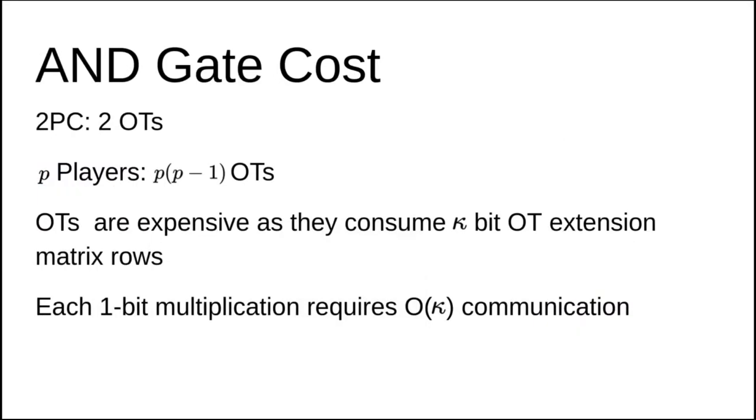Alice and Bob then output their respective shares. We showed that in order to evaluate an AND gate by two parties, we need to evaluate two terms interactively. Each of these interactive terms is evaluated via OT. As OTs are very expensive, the cost of an AND corresponds to two OTs in the two-party case, and for P parties, the cost is P times P minus 1 OTs.